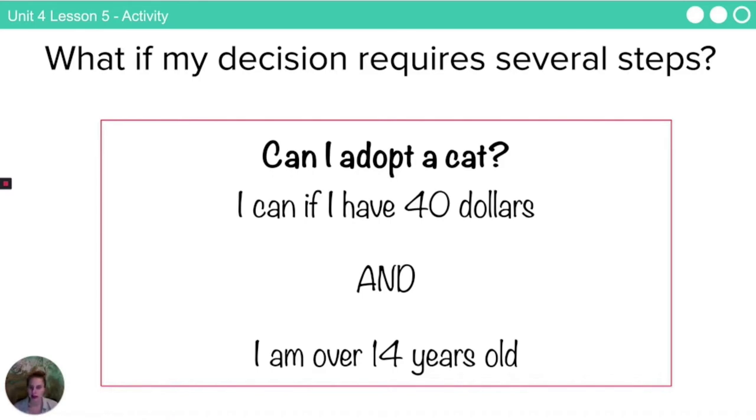I can if I have $40 and I'm over 14 years old. What would that look like in a flowchart? What do you think?